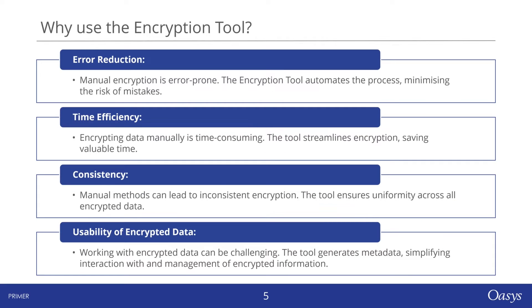Why should you use the encryption tool in OASIS Primer? It offers significant advantages: reducing errors through automation, enhancing time efficiency by speeding up the encryption process, ensuring consistency across your data security, and improving usability by generating helpful metadata. This tool isn't just about boosting security — it streamlines your entire encryption workflow, safeguarding your data effectively.